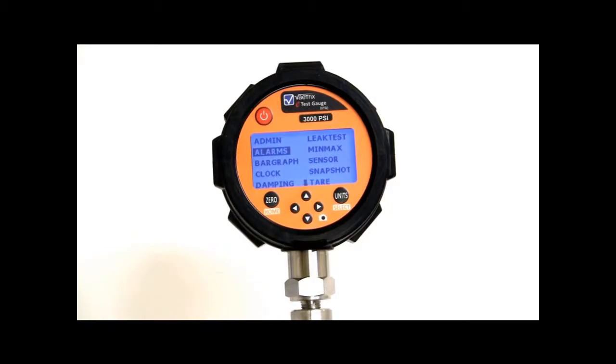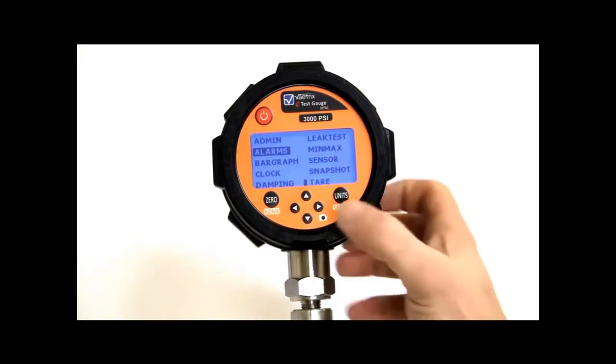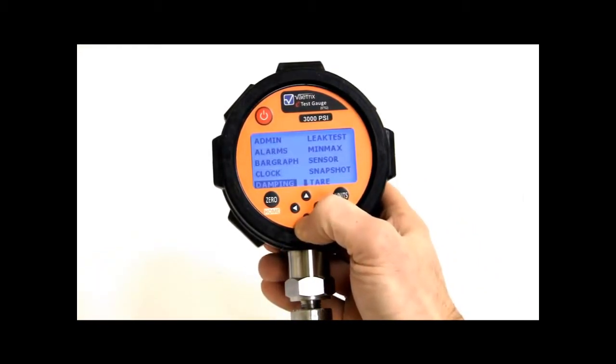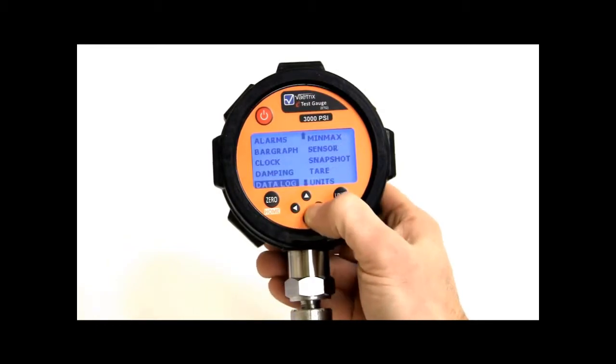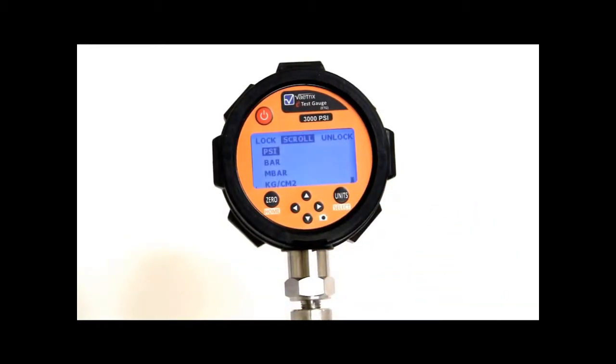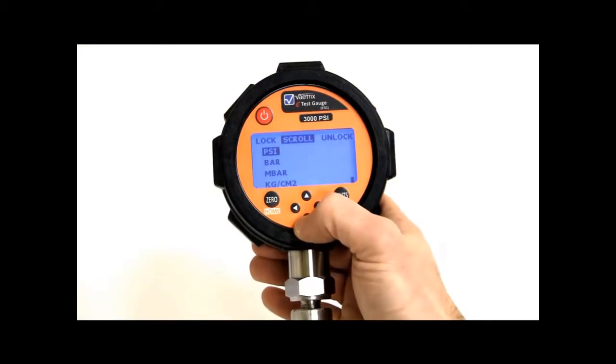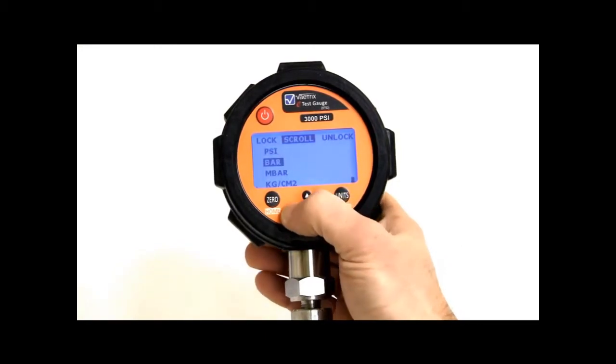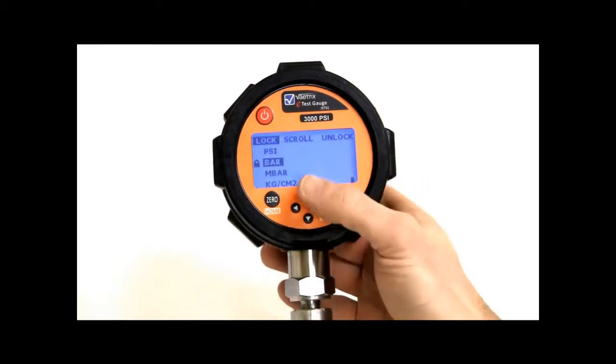Alright, so I covered alarms, leak tests, min-max, units. So let's go down into units. Now a neat feature that we put in, say you didn't want to scroll through all 26 units or you just wanted to concentrate on a couple, I can lock each unit. So if I didn't want to see bar, I can lock that right now.